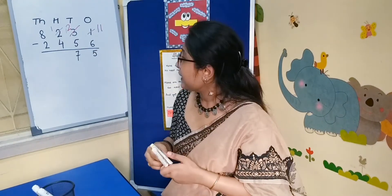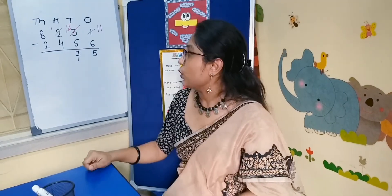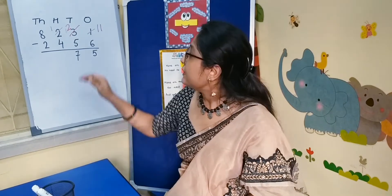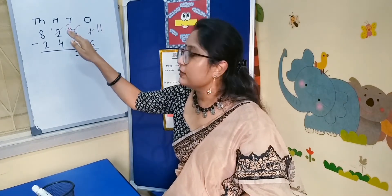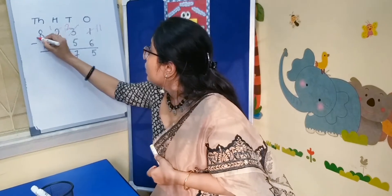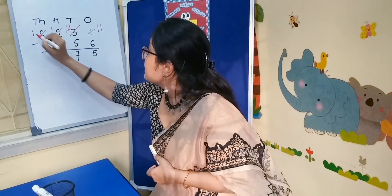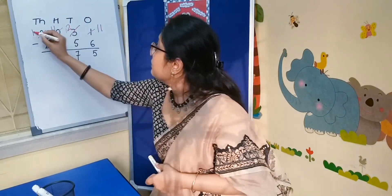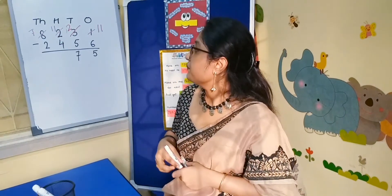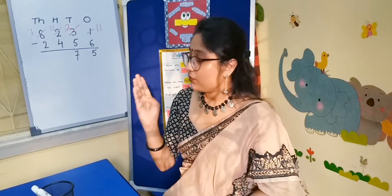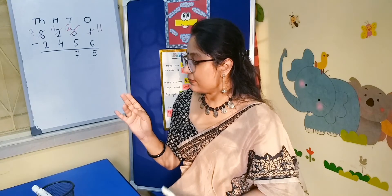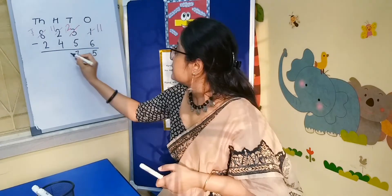Now again, here is 1 on the top and 4 on the floor. 4 is bigger than 1. So again we have to borrow 1 from the thousands column and it will become 11. Now counting from 4: 4, 5, 6, 7, 8, 9, 10, 11 — the answer is 7.